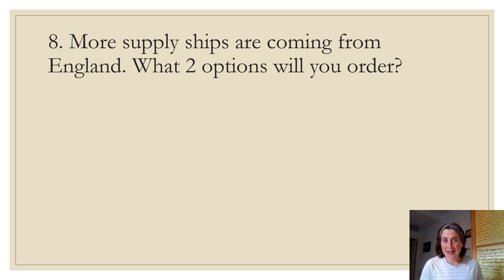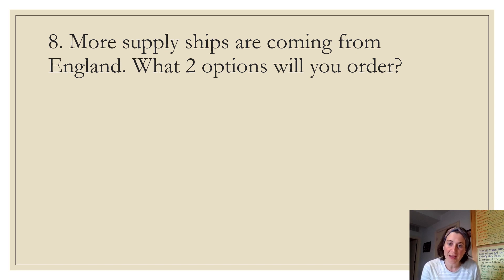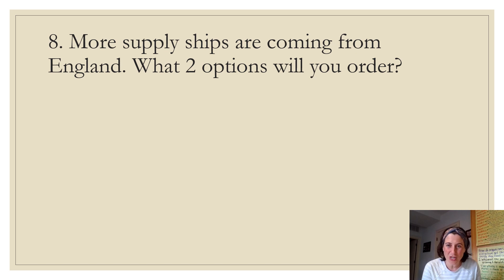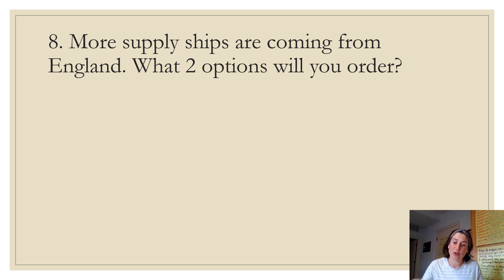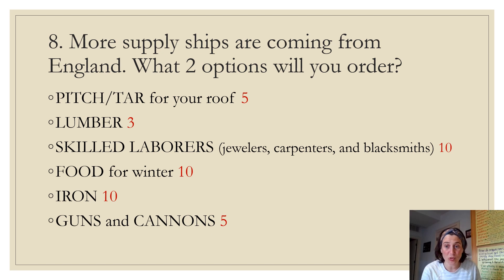Decision eight reveal — ordering supplies. What really happened was Jamestown received a lot of supplies from England. The most useful things were skilled laborers, iron, and food for the winter. They didn't really need lumber because there were so many trees around Jamestown, and they already had cannons on their fort. Points: pitch and tar 5, lumber 3, skilled laborers 10, food for the winter 10, iron 10, guns and cannons 5. Add your points for your two choices.